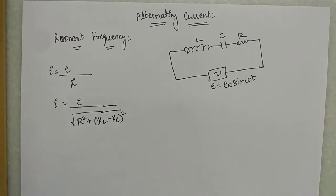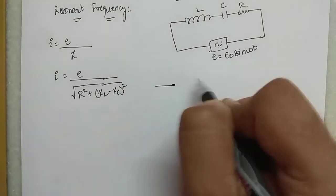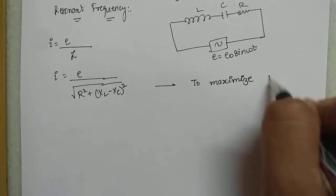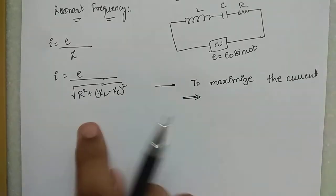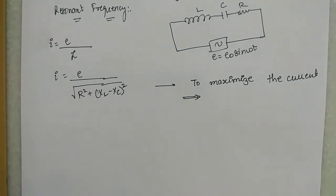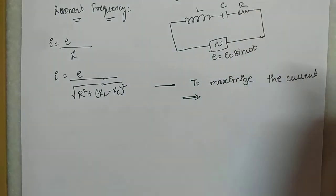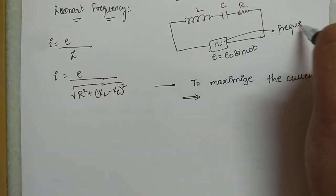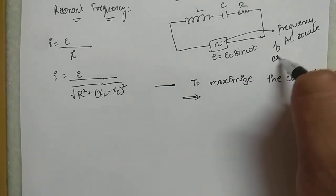To maximize the current, the denominator — the impedance — has to be minimum. Now, L, C, and R are constant values; you cannot change them. What can be changed is the frequency of the AC source. So we adjust the frequency of the AC source such that the current in the circuit is maximum.